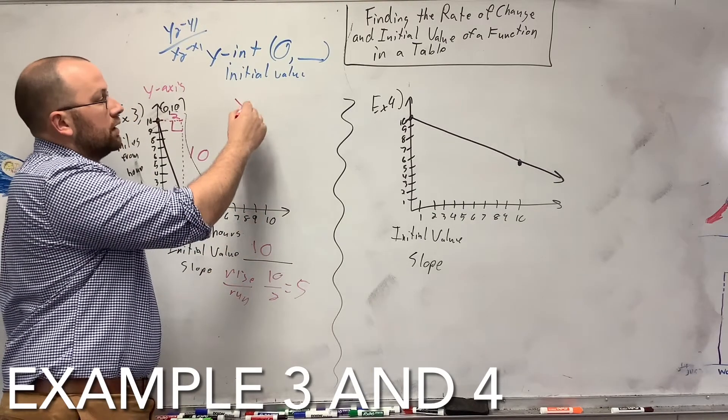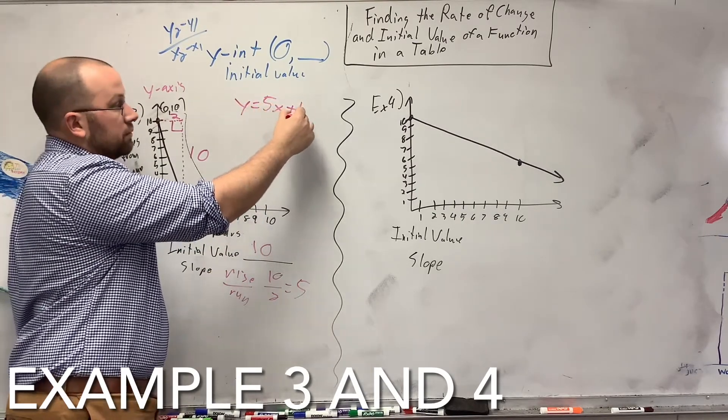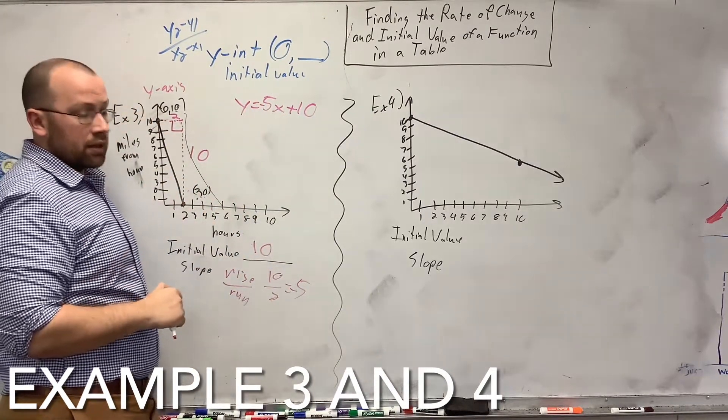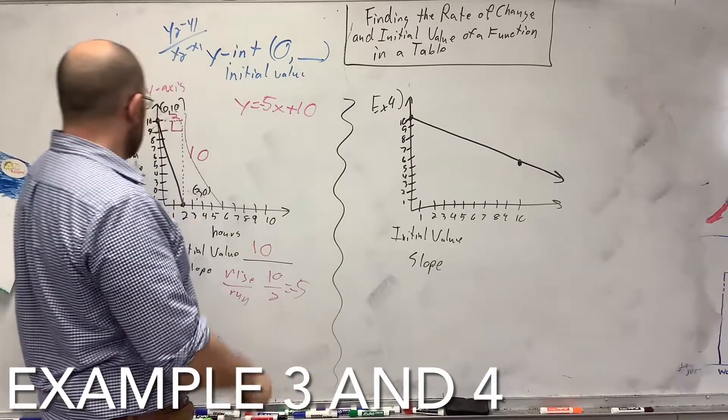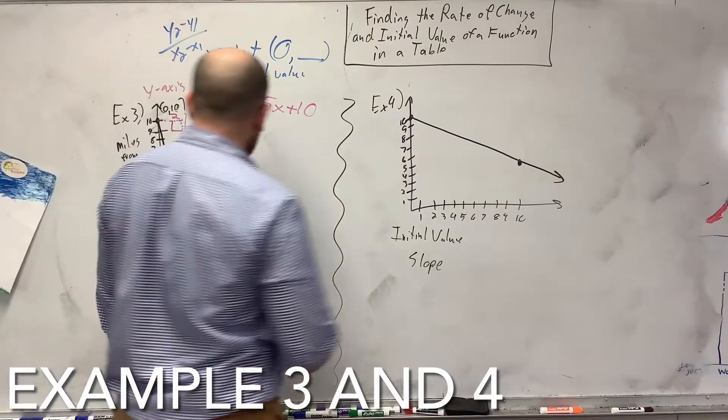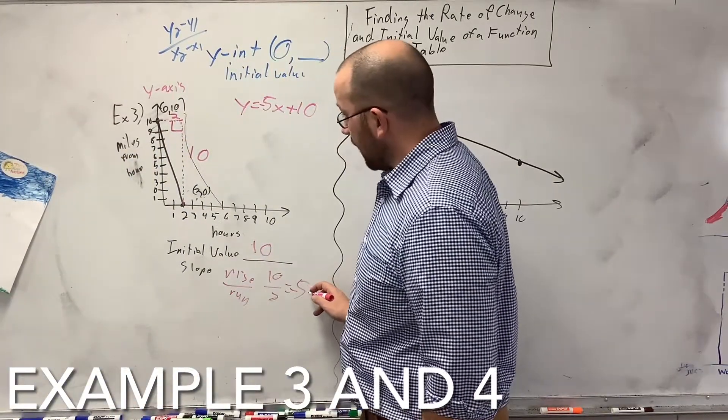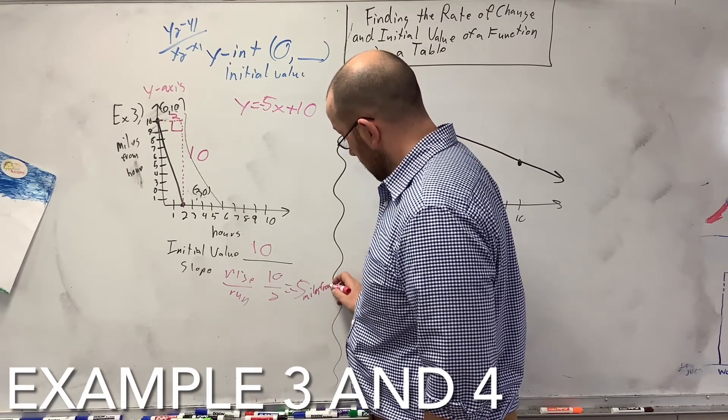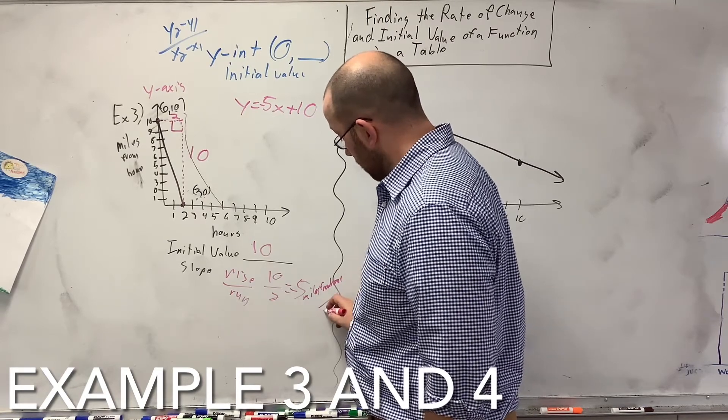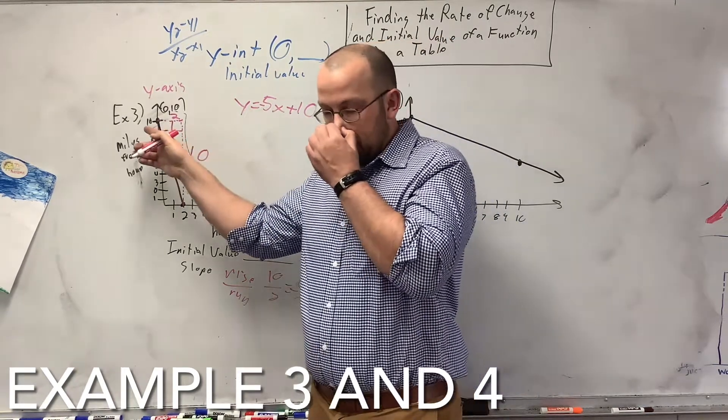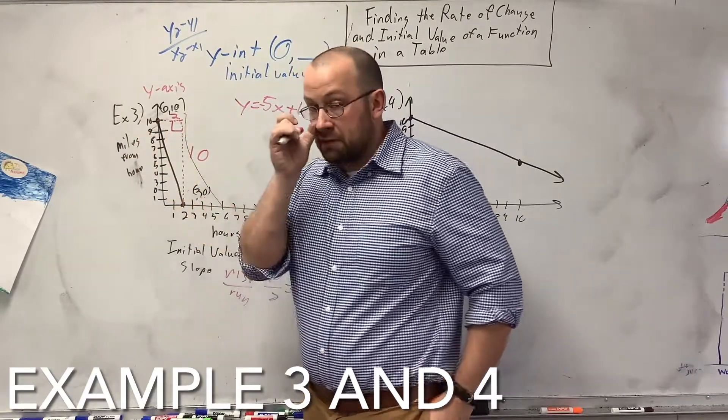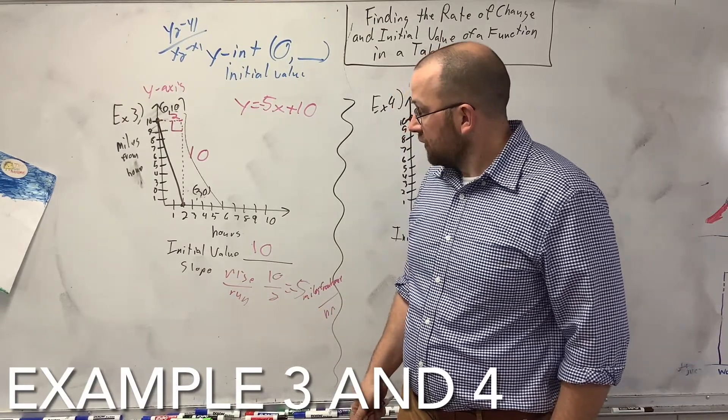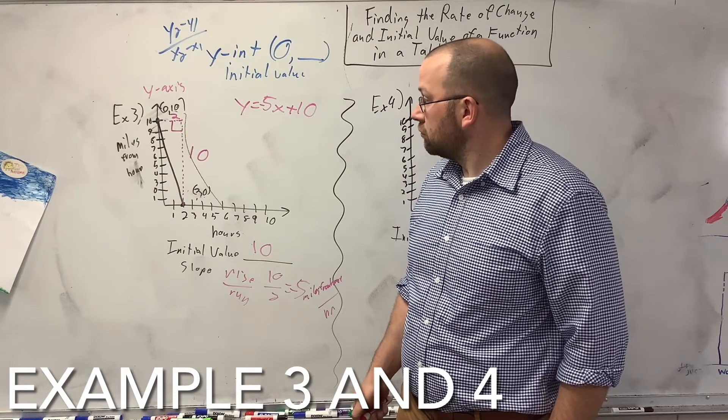Now, what does my slope represent? First, the equation would be negative 5x plus 10. It's negative because you're decreasing here with your line. What does this represent? Well, miles from home in hours. So, negative 5 miles from home per hour. So, you start at a distance, 10 miles away, and you're basically running home is all you're doing here. And you're going 5 miles per hour to get there.